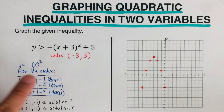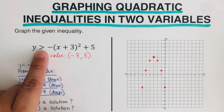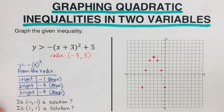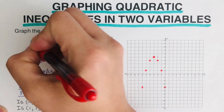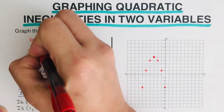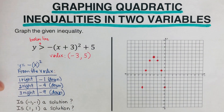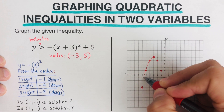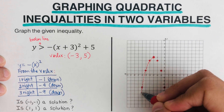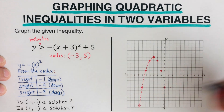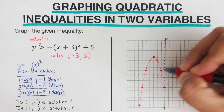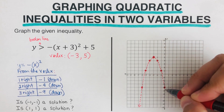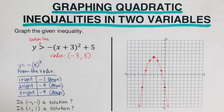Since the inequality is greater than with no bar underneath, we are going to use a broken line. I'll create a broken curve that connects these dots together, going to infinity on both sides. We use a broken line because there's no bar underneath the inequality symbol.